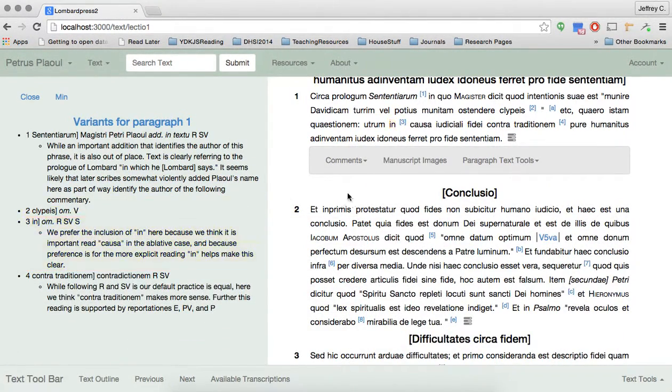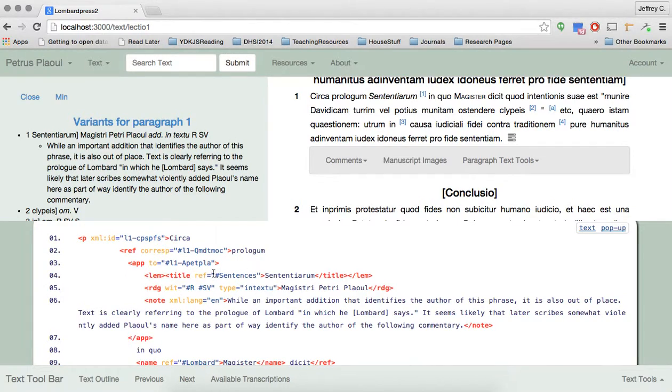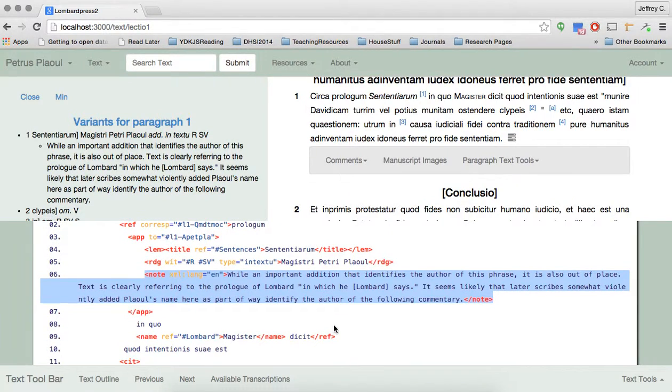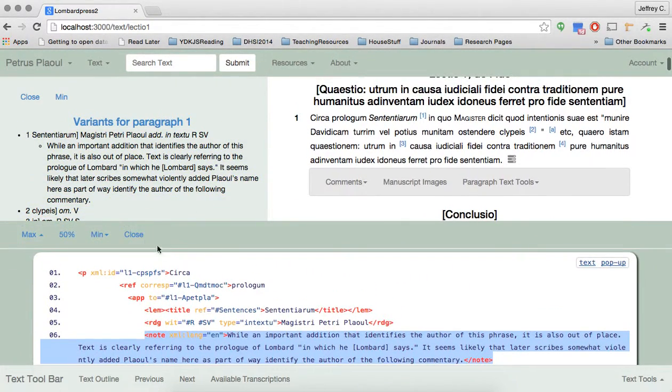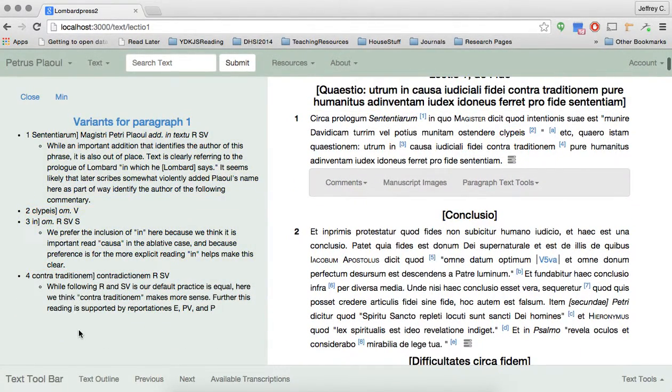So how is this included? Well, when an editor works on a paragraph, they create an app entry. They create the lemma, and they create the reading. And then they can add a note. These notes can be extensive. They can be pages. They can be paragraphs. They can be short sentences, whatever the editor wants. And because of the dynamic nature of the interface, we can include all of that content in a scroll screen here.